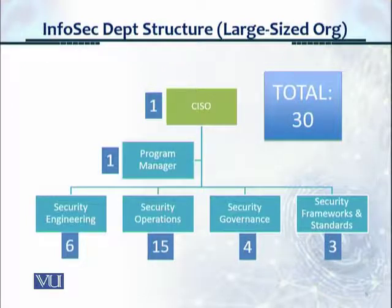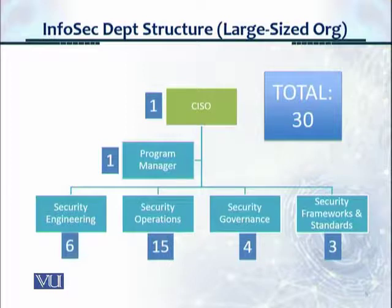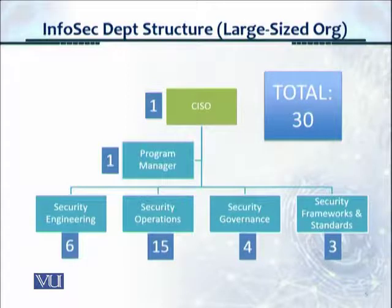With five people per shift and three shifts, that's 15 people in security operations. For security governance: one person for policies, one for training and awareness, one for compliance — about three or four people. For security frameworks and standards, you'd have one manager and one or two support staff — about three people. Adding all of these up, it's about 30 people.